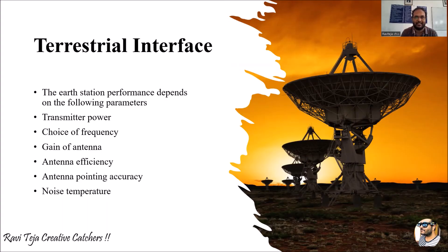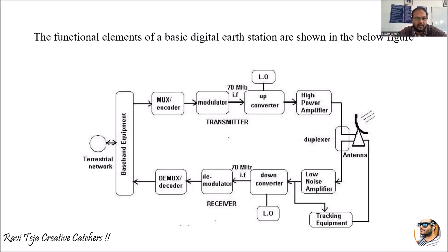The ultimate goal of using an earth station or communicating with a satellite is to get a proper signal throughout the world — we need good signal quality and good signal strength, for which we need to maintain all these parameters in any kind of terrestrial interface. Based on all these parameters, we have drawn a functional block diagram of a basic digital earth system containing one transmitting unit, one receiving unit, both connected to an antenna, and a tracking equipment — all of which we have already seen.